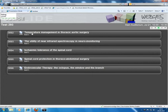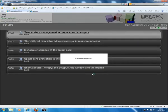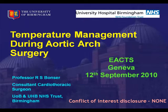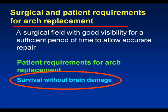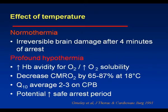To survive without brain injury, at normothermia, irreversible brain damage occurs after four minutes of arrest. And so we use cooling to try and increase the ischemic tolerance of the brain.